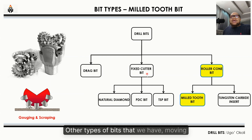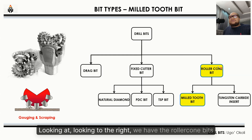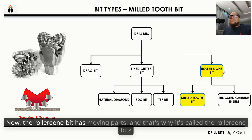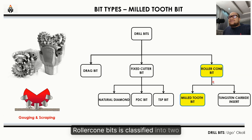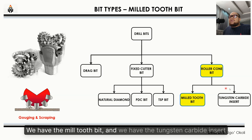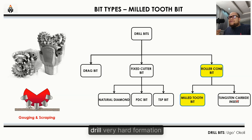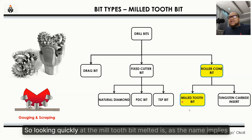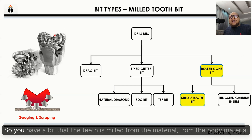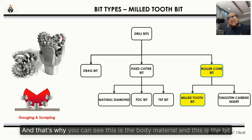Looking to the right, we have the roller cone bits. The roller cone bit has moving parts, which is why it's called the roller cone bit. Roller cone bits are classified into two: we have the mill tooth bit and the tungsten carbide insert (TCI) bit. Tungsten carbide is a very hard material placed on these bits to drill very hard formations. With the mill tooth bit, as the name implies, the teeth are milled from the body material.